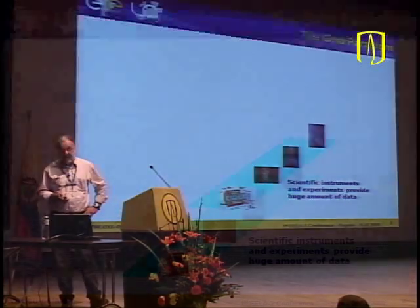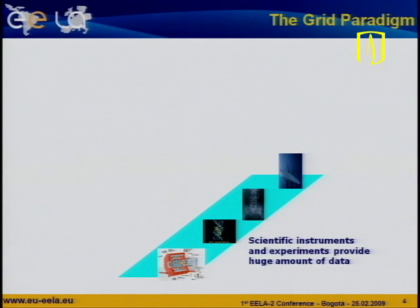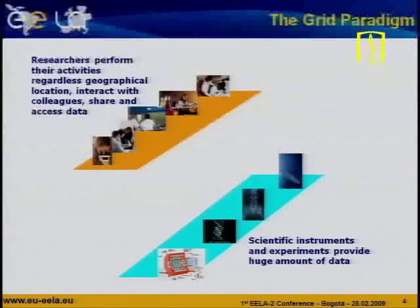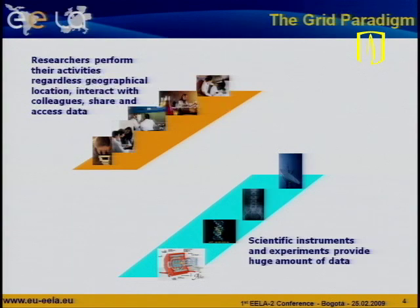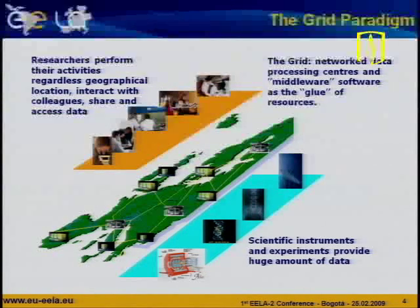The grid paradigm: on one side you have the scientific instruments — it could be a John Laboratory, high-energy physics, or whatever you want — labs worldwide distributed. On the other side, you have the people, because an instrument without people has no meaning, and people without instruments can have a beer but certainly not work. These people are distributed worldwide, and between them what we put is the grid, which is a networked data processing center where middleware software is the glue of the resources.